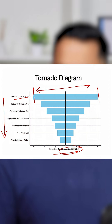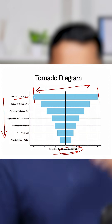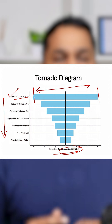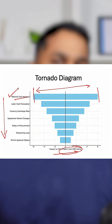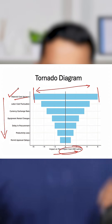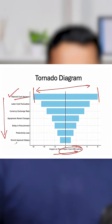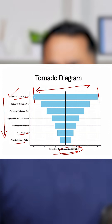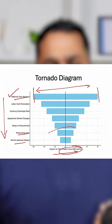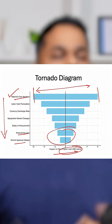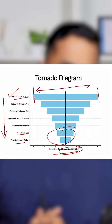That is what sensitivity analysis is. In this case, material cost variance would be the highest reason. And then if you look at permit approval delays and productivity loss, these will have less impact on the project.